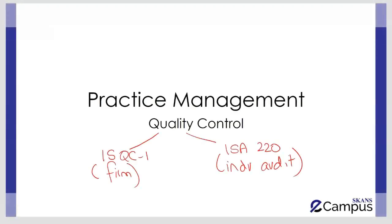In this video, we are going to cover the elements of quality control. There are two relevant standards which apply. ISQC 1 provides guidance on the overall quality control systems that should be implemented by an audit firm — these apply at the firm level. Then there is ISA 220, which covers quality control on an individual audit of historical financial information. Please understand that these elements will need to be applied to the scenario in the AAA exam.